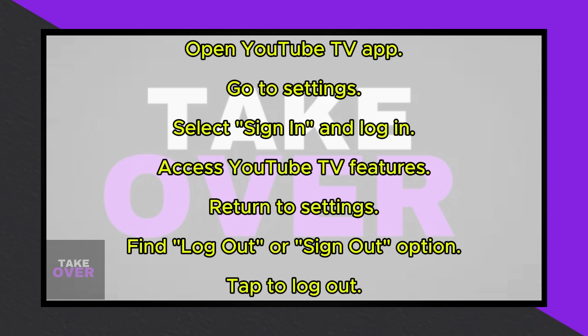To sign out, return to the settings menu by tapping on the gear icon again. Scroll down to find the log out or sign out option. Tap on the appropriate option and you will be successfully logged out of your YouTube TV account.